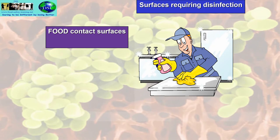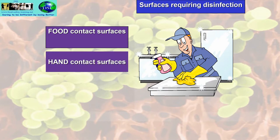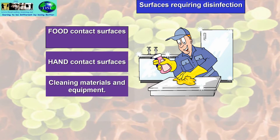Not all surfaces require disinfection. Floors, walls, ceilings, doors, windows, etc. do not have to be disinfected. There are two main surfaces that do: food contact surfaces and hand contact surfaces. Cleaning materials and equipment such as mops and buckets also require disinfection. For cloths, it's far better to use disposable cloths like blue paper towel on a roll rather than j-cloth type cloths which people disinfect and reuse.